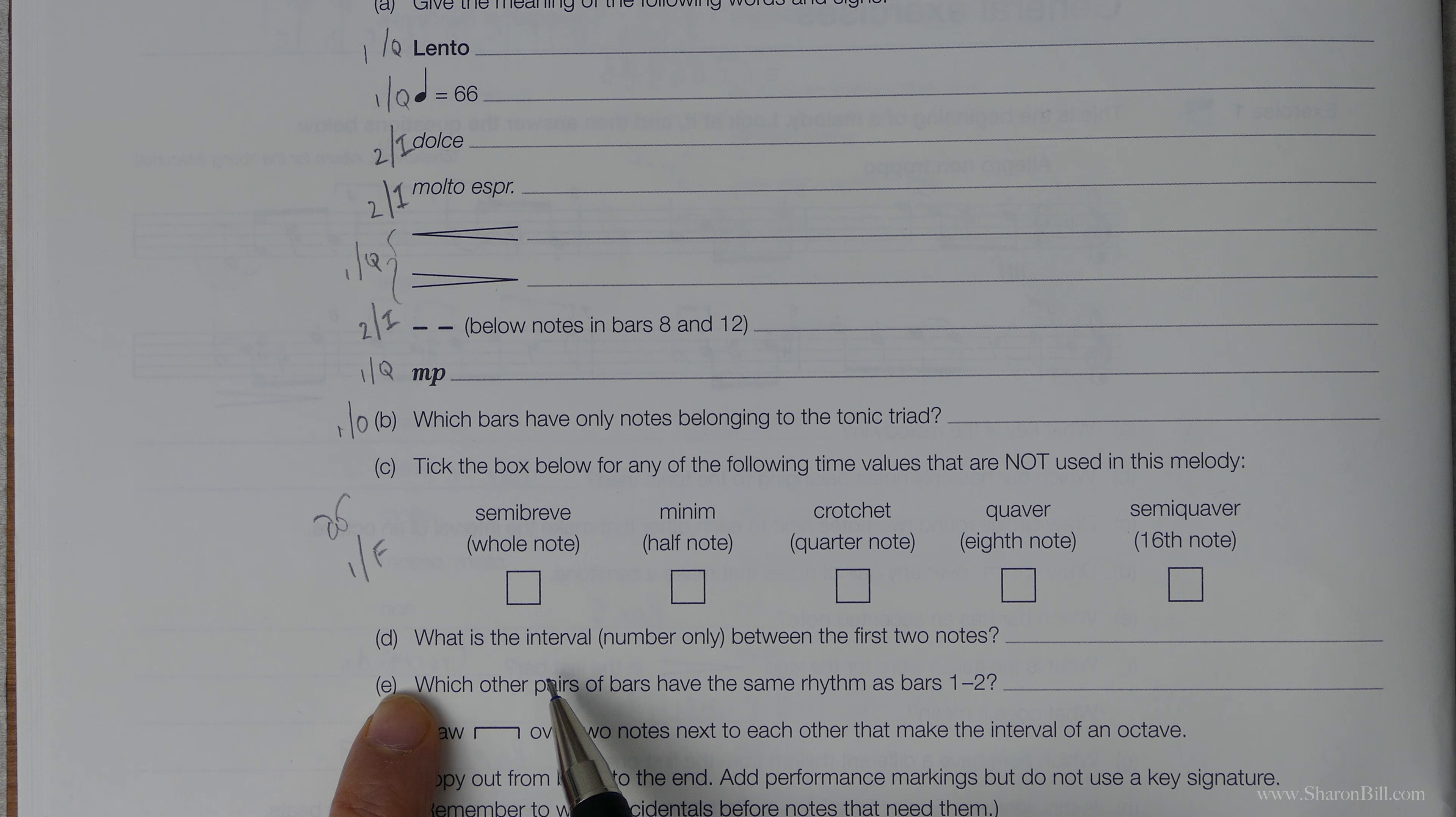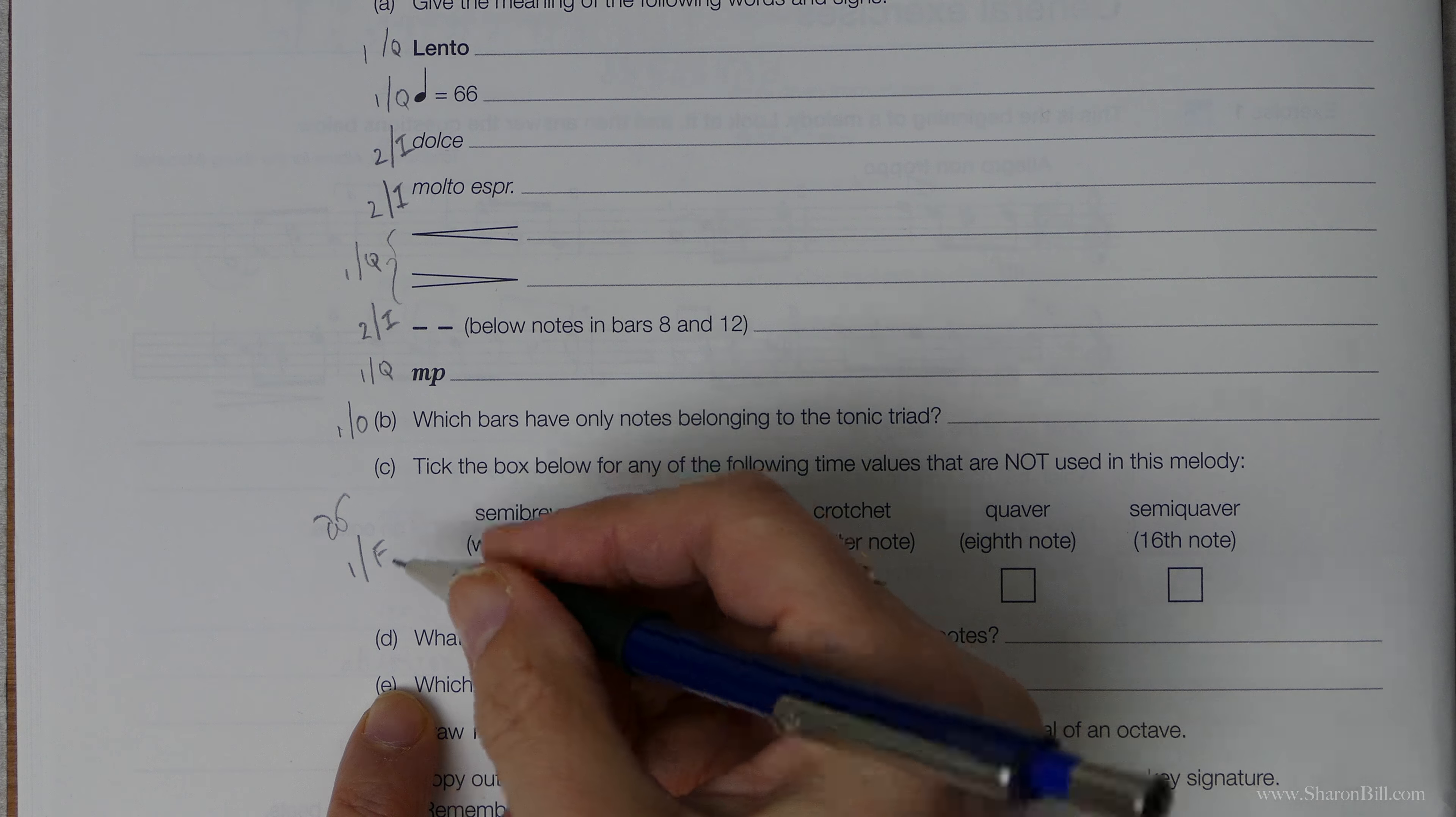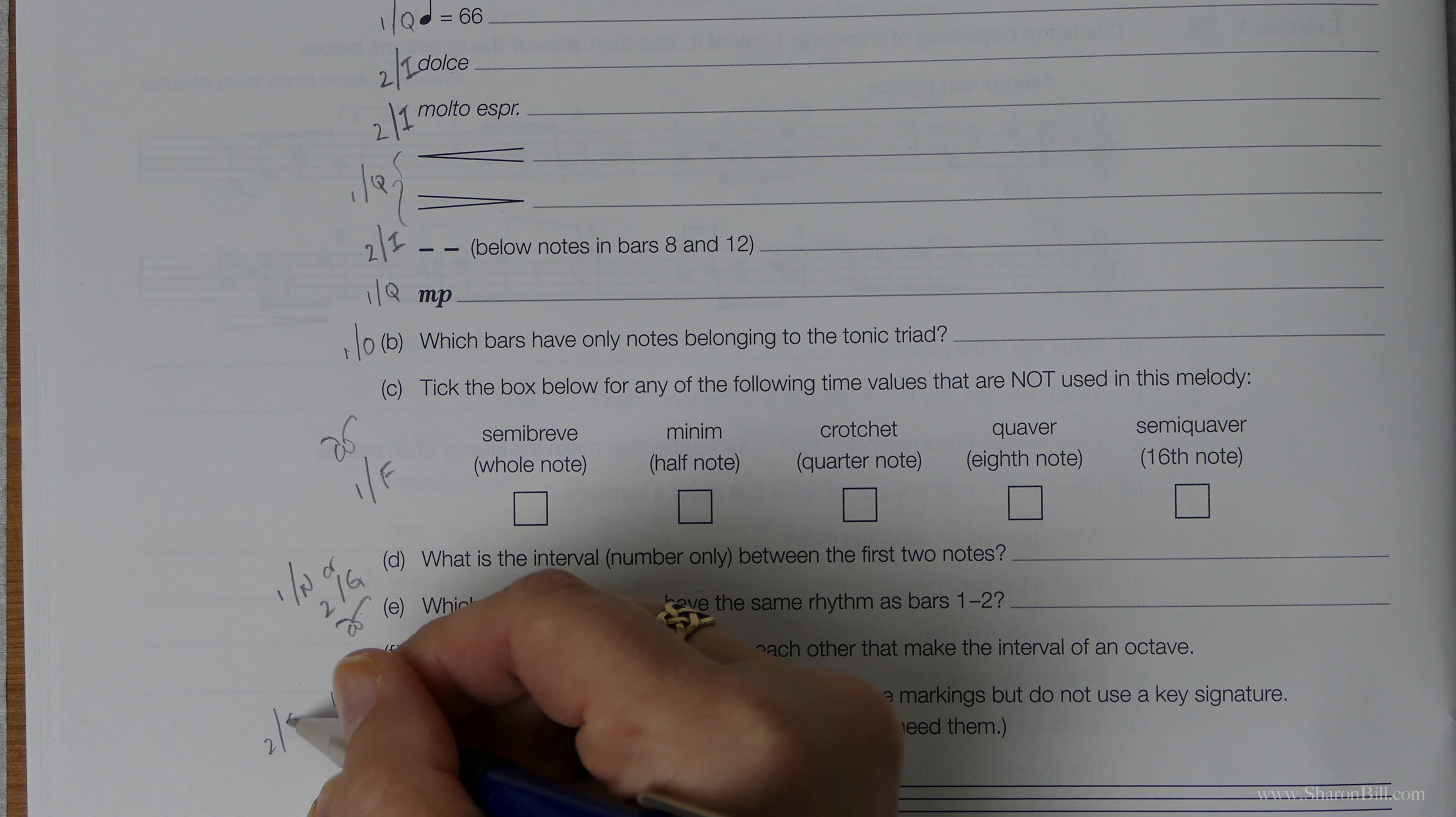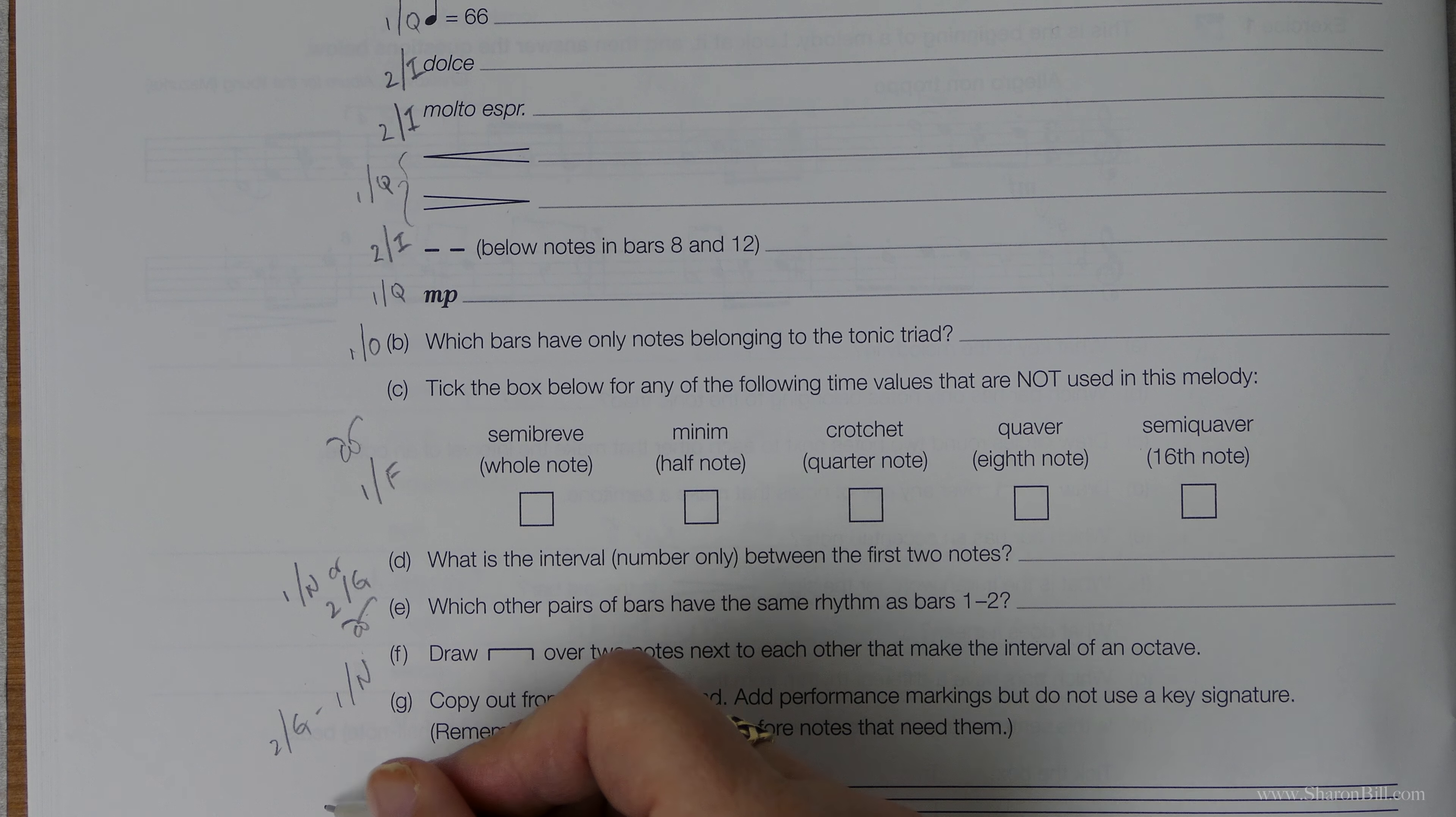What is the interval between the first two notes? You can find the information to help you answer that in grade 1 section N. It's also in grade 2 section G. Which other pairs of bars have the same rhythm as bars 1 and 2? So you just need to keep your eyes peeled there. Draw a bracket over two notes next to each other that make the interval of an octave. The intervals are grade 1 section N or 2 section G again. And then copy out from bar 9 to the end.